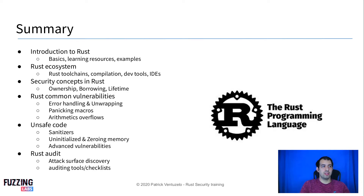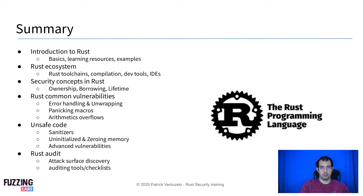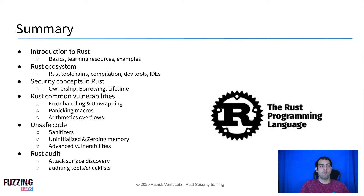We're going to discuss the most common vulnerabilities that can be found in Rust code. There are quite a few, including unhandled panics and macros that trigger panics in Rust code. A panic can be a critical or non-critical bug depending on the environment. We'll also cover arithmetic overflows and similar issues.